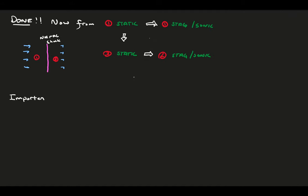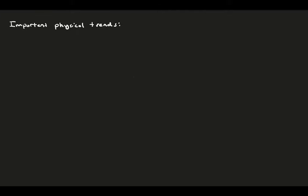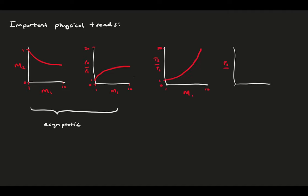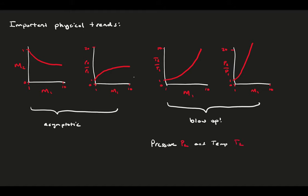Let's back away from the equations and think about what they tell us physically. Considering variables as functions of the upstream Mach number: the downstream Mach number decreases as upstream Mach number increases, though it converges to a constant. The density ratio increases slightly but also settles asymptotically. Conversely, both the temperature and pressure downstream of the shock increase dramatically with Mach number and blow up exponentially. This is a defining feature of shock waves — how high pressure and temperature can get as flow speed increases.